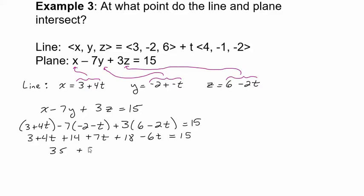This is where sometimes I make little mistakes. My adding, that's a terrible place to make a mistake. Subtract 35, divide by 5, so I get t equals negative 4.